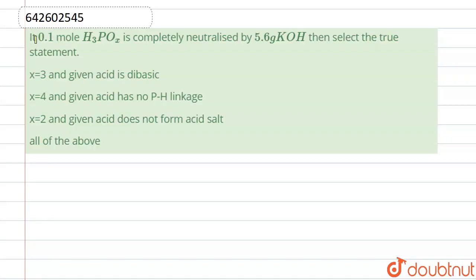If 0.1 mole of H3PO_x is completely neutralized by 5.6 grams of KOH, then select the value of x for H3PO_x.